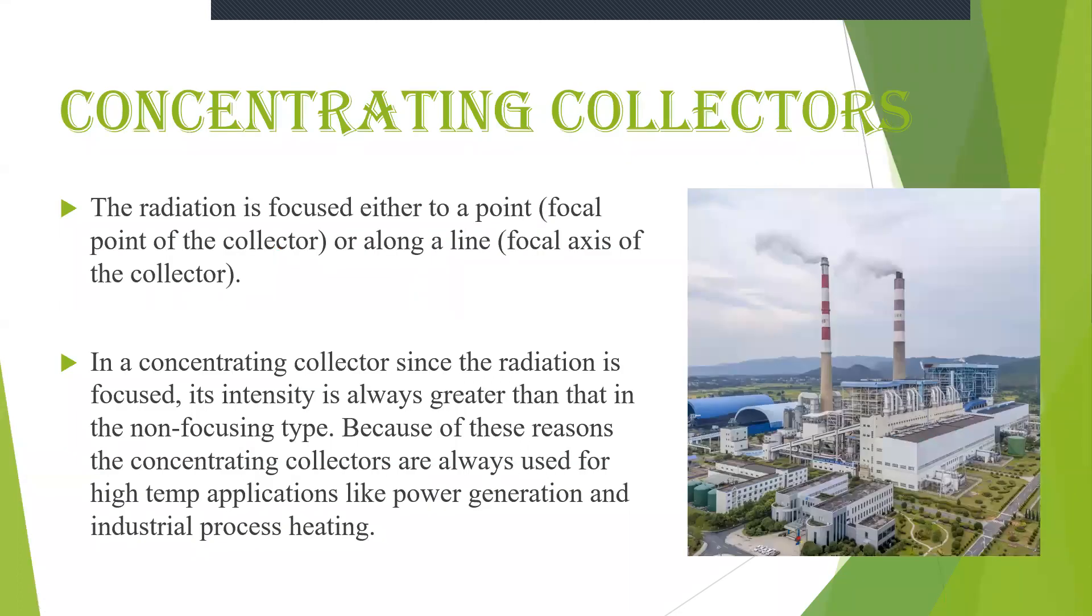In the last video we have seen about the different solar collectors in that we have come across concentrating and non-concentrating types of collectors. What is a concentrating collector? These are some solar collectors where the radiation is focused either to some focal point or along the line of the collector. Since this radiation is focused either on the side of the collectors then it is said to be the concentrating collectors.